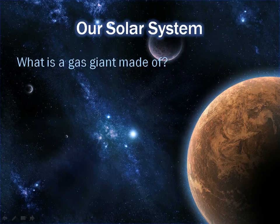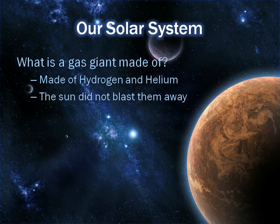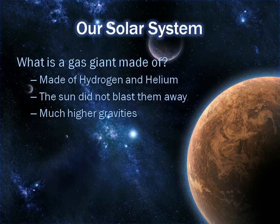The next question is what is a gas giant made of? It's made of hydrogen and helium. It's able to have this hydrogen and helium because the sun did not blast them away. Hydrogen and helium are normally gases, and heating a gas causes it to expand and potentially blow away, as we saw in our investigation. The gas giants also have much higher gravity, so it helps to hold those gases in place.